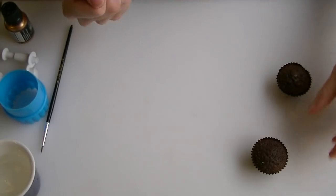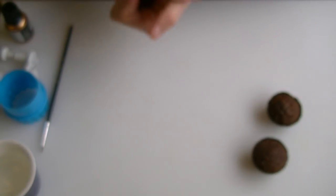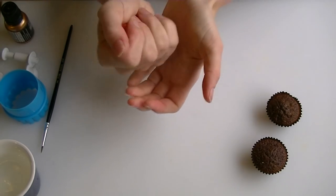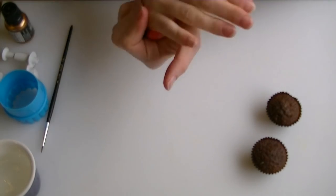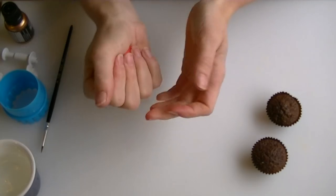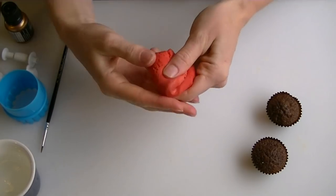In this video we're going to decorate some little miniature cupcakes. It's quite quick and easy to do. We're going to make them look like Christmas baubles, and it's something that's quite nice to do with the children.